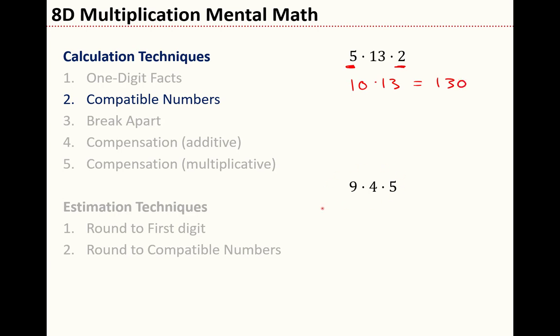How about the next problem? What two numbers do I want to multiply first? Yes, that's right, the 4 and the 5. So that gives us 9 times 20 which is 18. Stick on the 0, 180. So if you are multiplying three or more numbers together, look for the compatible numbers.